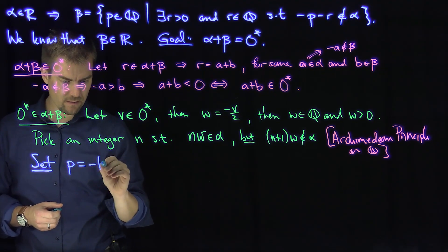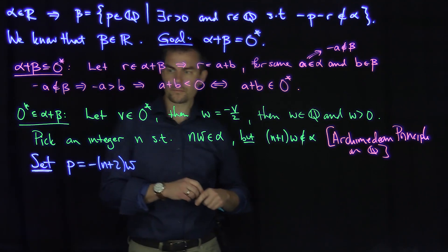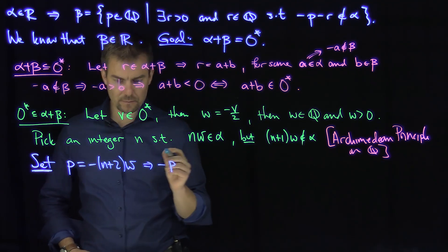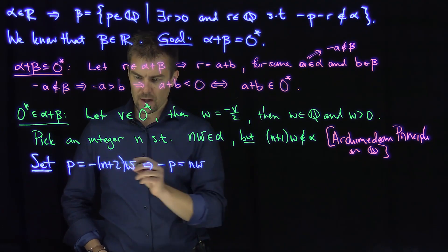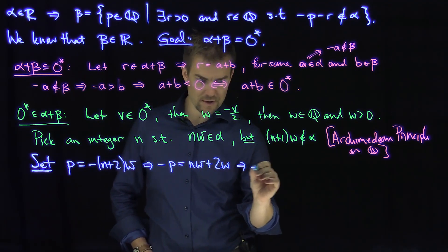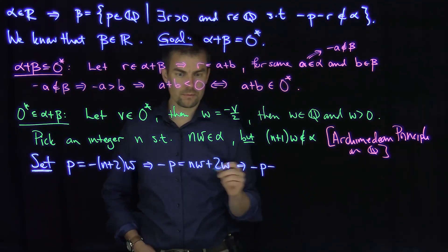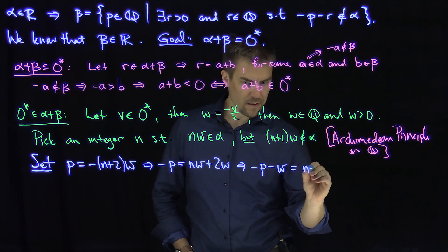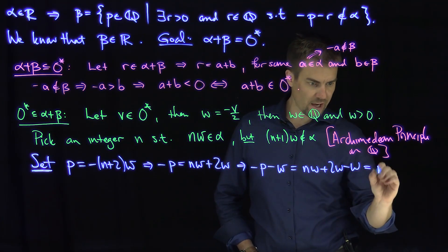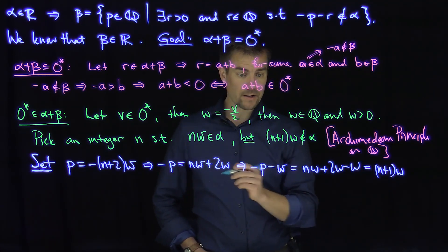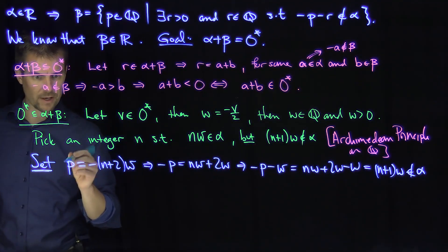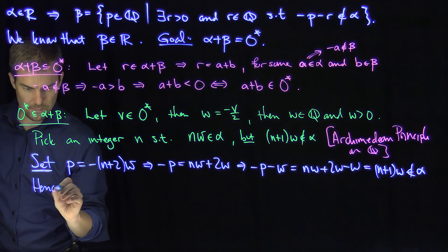We can set p to be negative n plus 2 times w. So then we have to look at negative p. This implies that negative p is going to be n w with a positive sign, and then minus 2w turns into a positive 2w. This implies that negative p minus w is equal to n w plus 2w minus w, which is going to be n w plus w, which is n plus 1 w. And so that says that negative p minus w is not in alpha. This is not in alpha. So this says that p is in beta. Hence p is in beta.